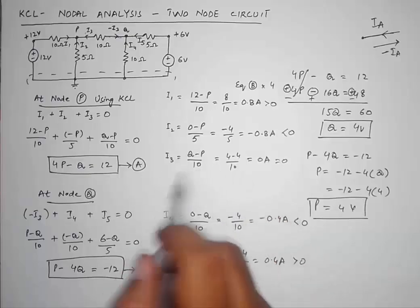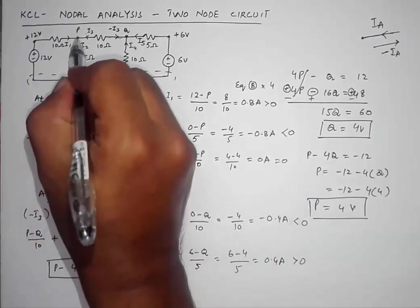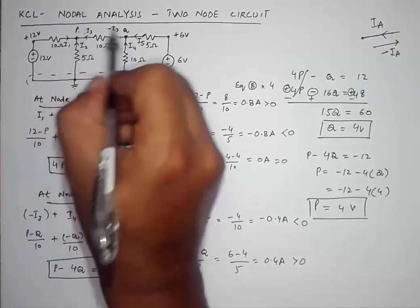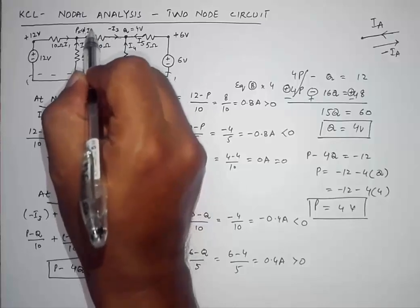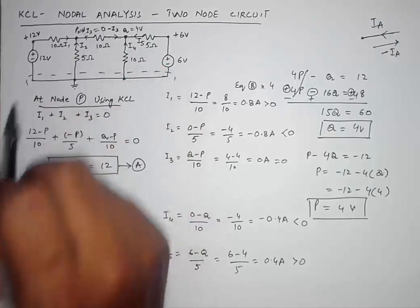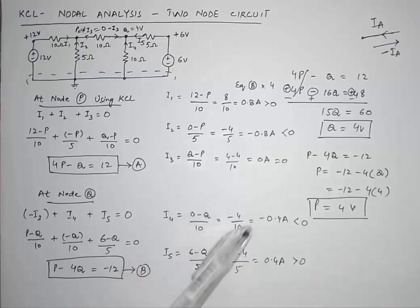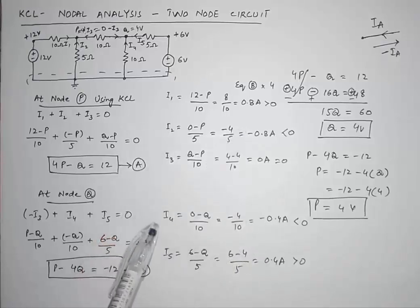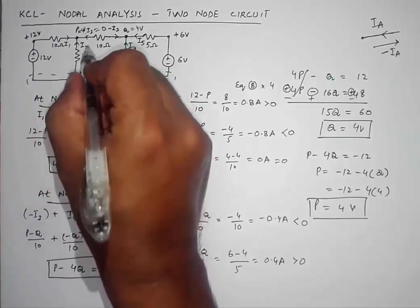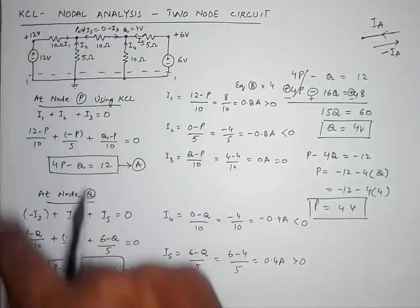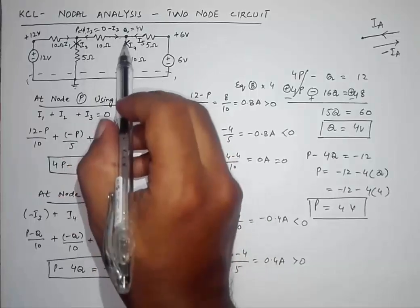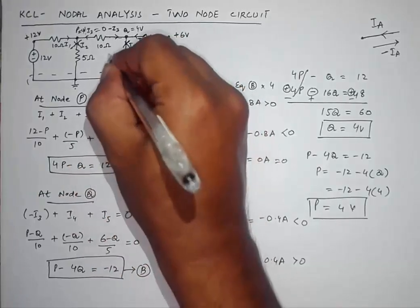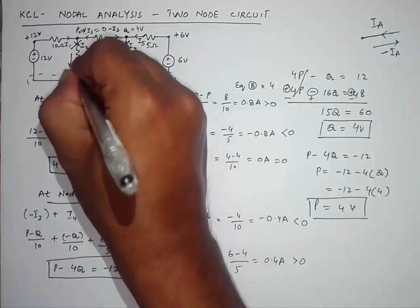I3 = 0, which confirms that since both node voltages are 4V, no current flows in that branch. I2 and I4 are negative, meaning their actual directions are opposite to what we assumed. I will negate the assumed directions of I2 and I4 and place the corrected current directions on the circuit diagram.